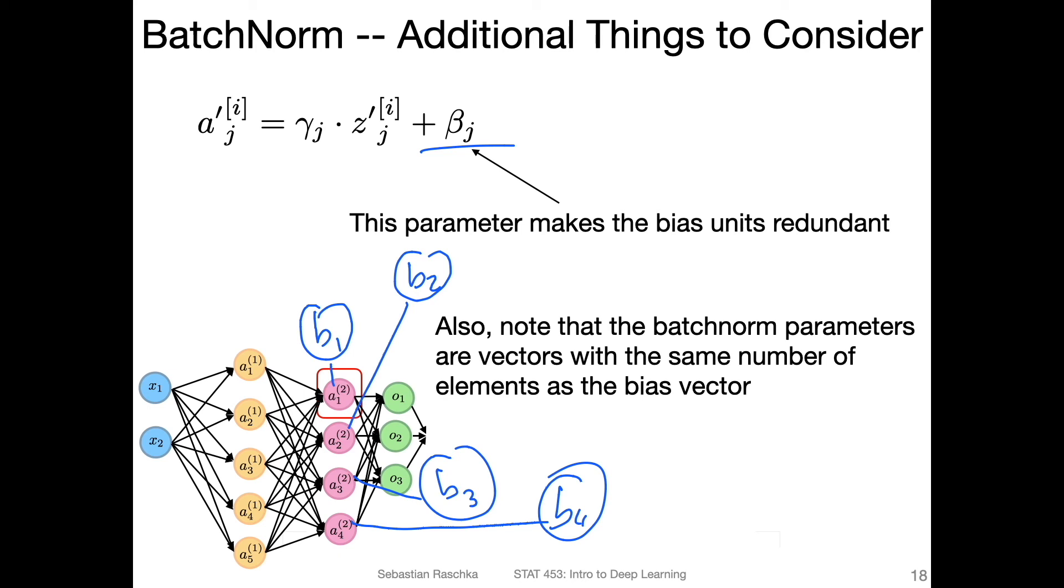If you think about how the bias works, right, the net input for the second layer would be weights from the first layer multiplied by the activation from the first layer plus the bias. I'm only considering a simple case, omitting the index. But this kind of becomes redundant because essentially the bias could be already included in this beta.